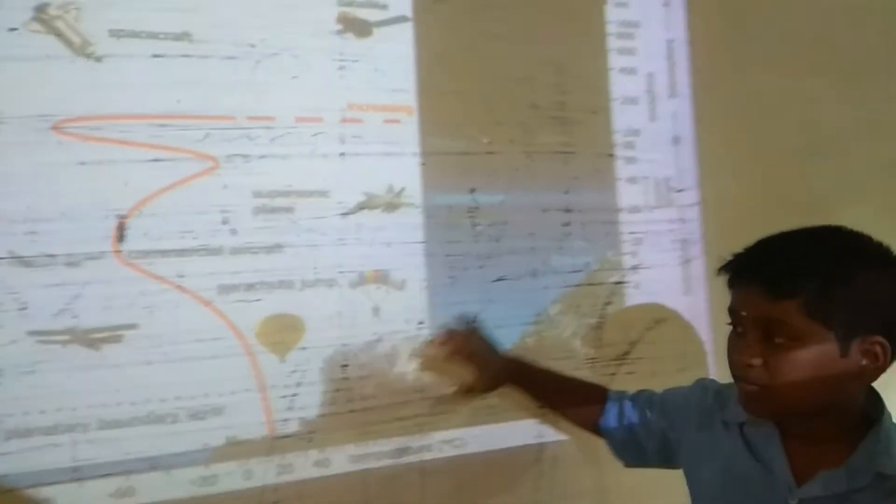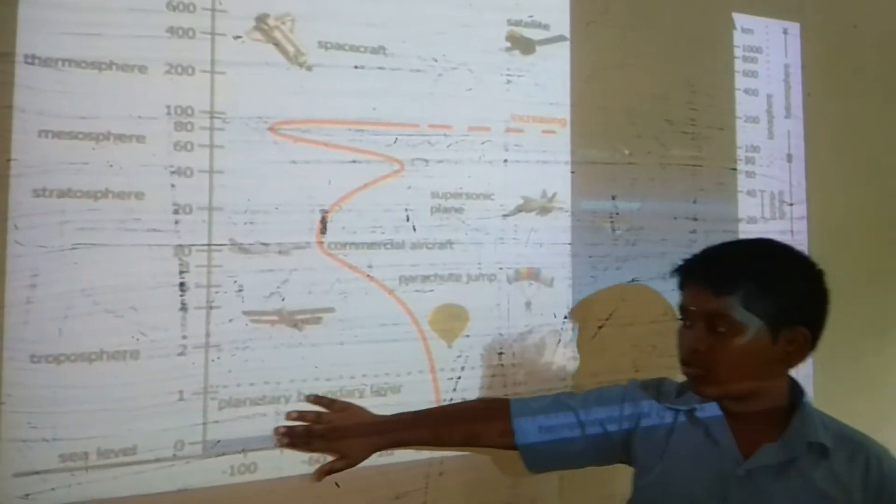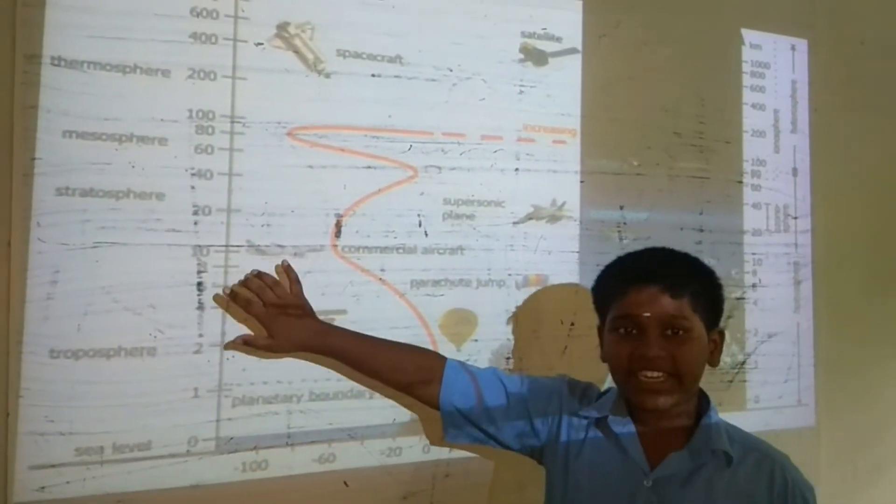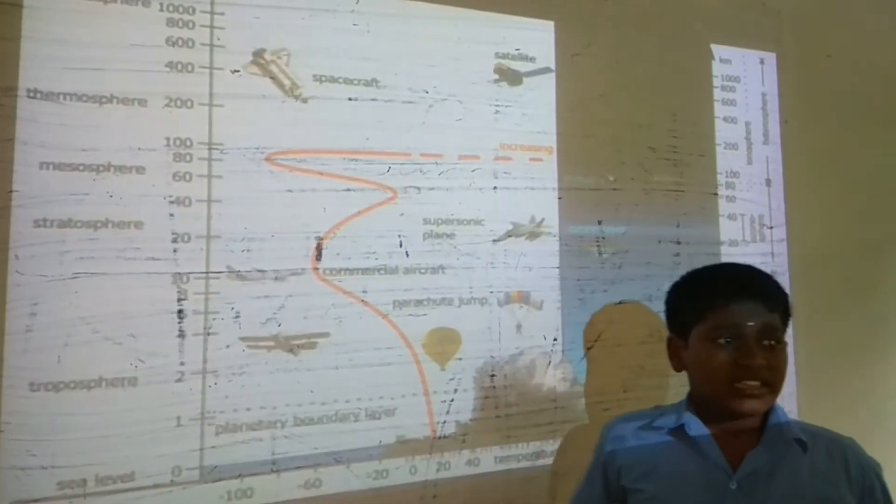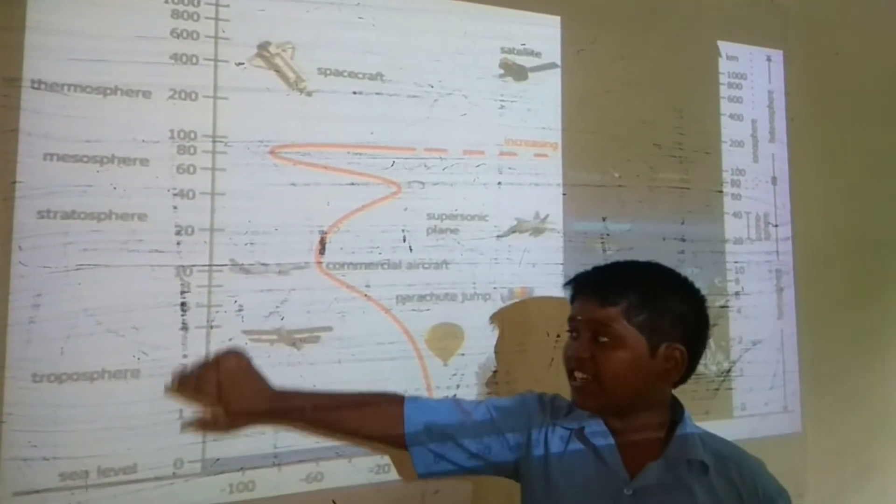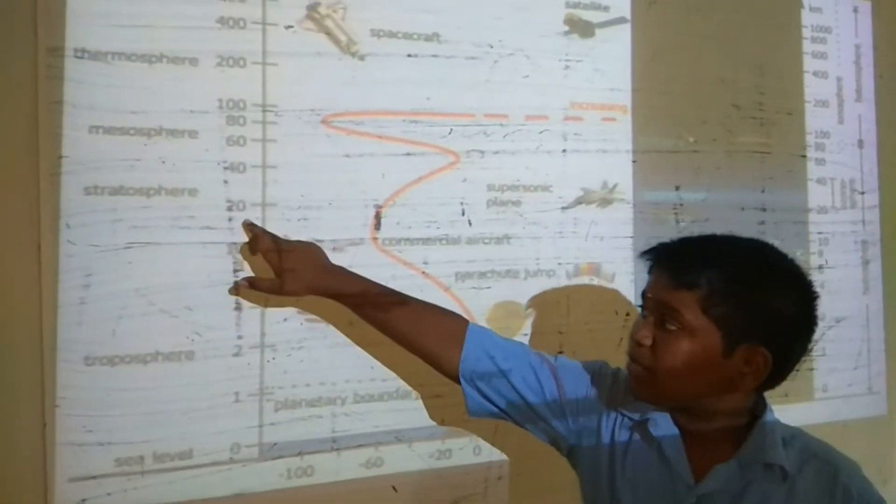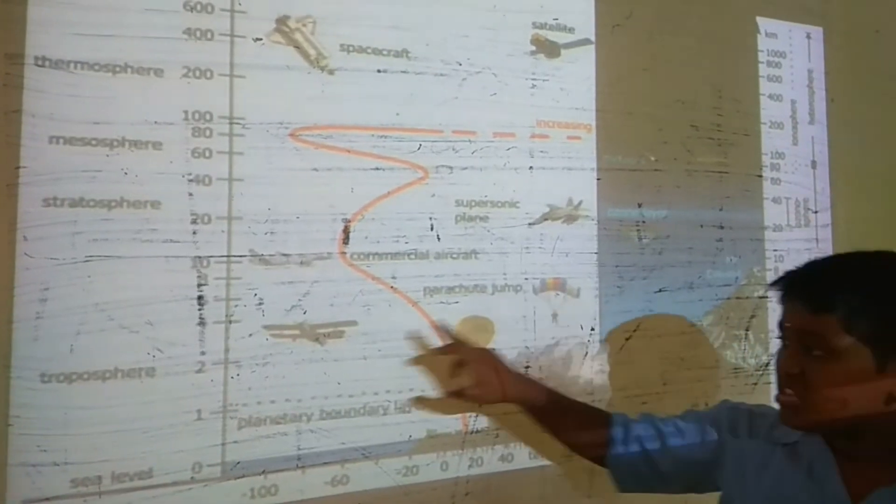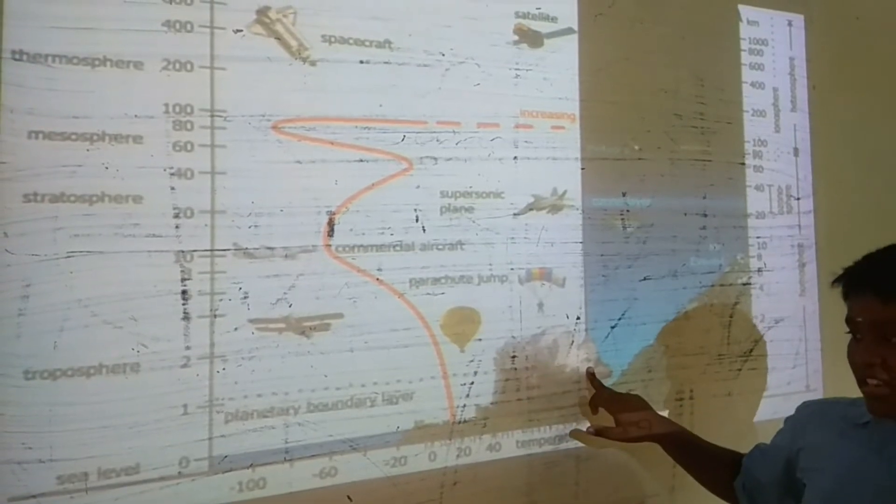First, I am going to explain the Troposphere. The Troposphere extends from 8 to 18 kilometers: 8 kilometers near the poles and 18 kilometers near the equator. In this Troposphere we can observe commercial airplanes, parachutes, jet lines, air balloons, and clouds.